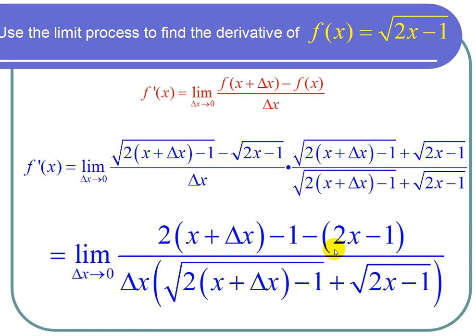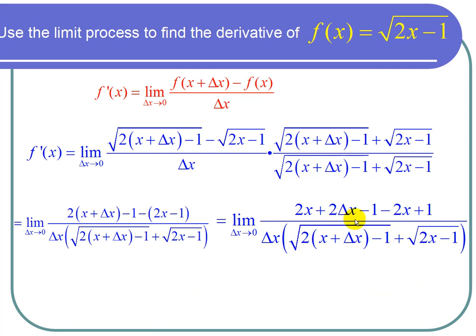And the nice thing is much of this cancels. The 2x and minus 2x cancel, the negative 1 and the plus 1 cancel, and I'm left with just 2 delta x up in the numerator.